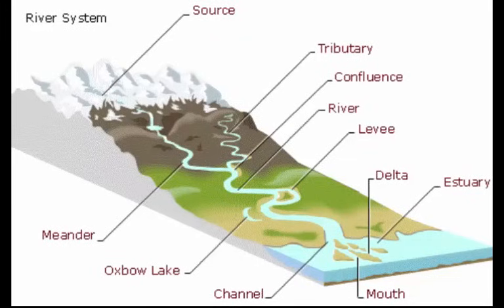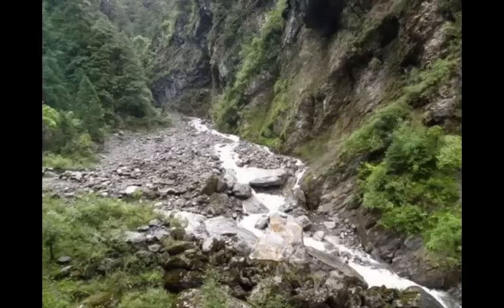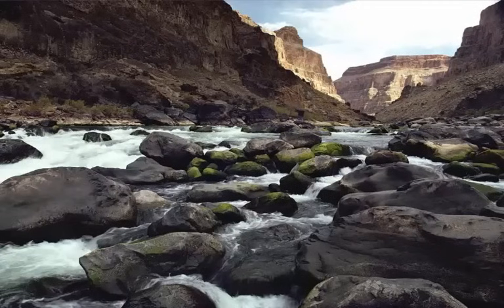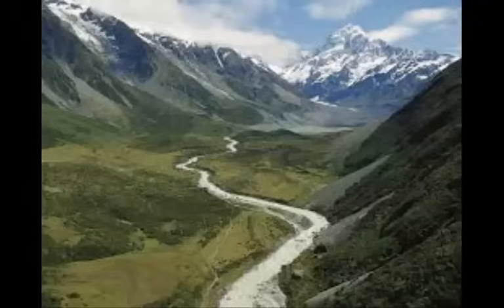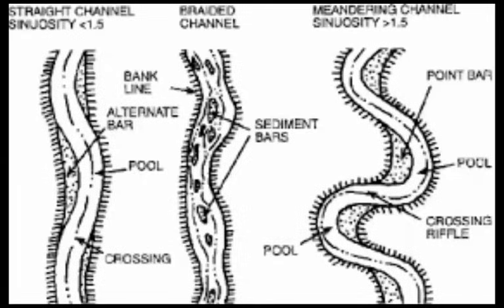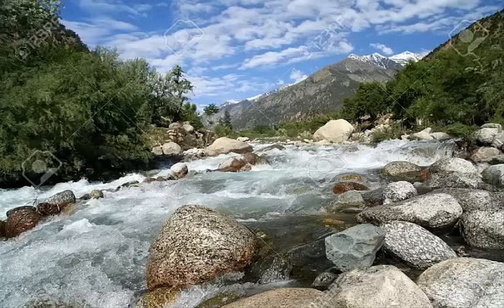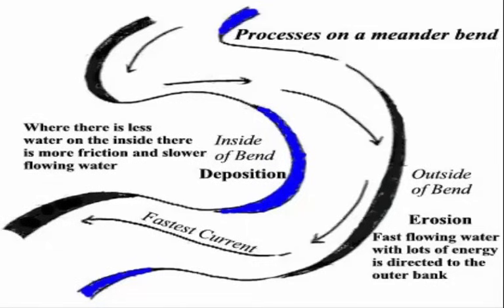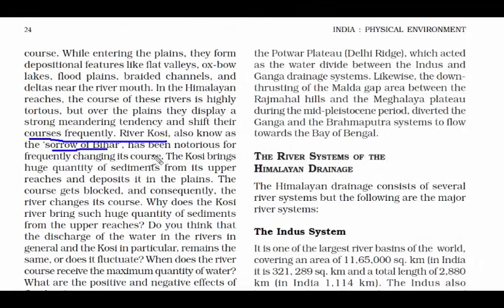When the rivers come down from the Himalayas to the plains, they bring large chunks of stones, pebbles, and soil — mostly sedimentary rocks — creating huge valleys over time. When rivers enter the plains, they form depositional features like flat valleys, oxbow lakes, flood plains, braided channels, and deltas near the river mouth. In the Himalayas the river course is highly tortuous — with repeated turns — but in the plain area they display a strong meandering tendency. River Kosi, known as the Sorrow of Bihar, frequently changes its course and is prone to flooding.